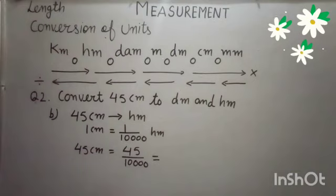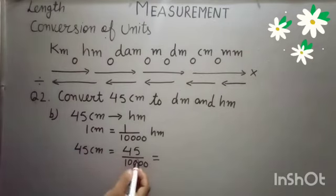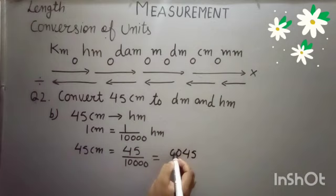Now we will use decimal division. 4 zeros are there. So we will put decimal before 4 places. But we have only 2 places. So we will put 2 more zeros.